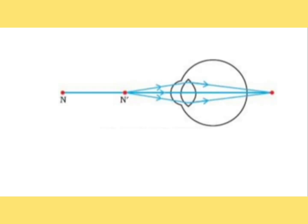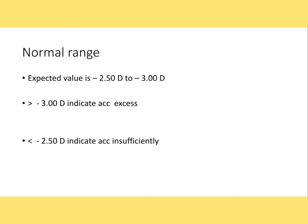When minus lenses are added, accommodation becomes active because the focus is moved behind the retina and the patient induces accommodation to compensate. Remember that accommodation and convergence are interrelated — this is part of the near triad: accommodation, convergence, and miosis. As the patient induces accommodative convergence, negative fusional vergence also becomes active. This is why the PRA value is also an indirect way to measure negative fusional vergence.